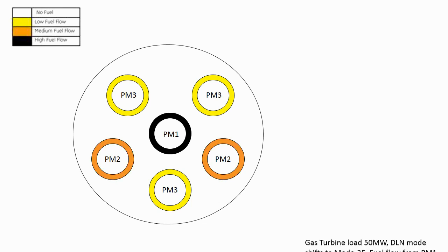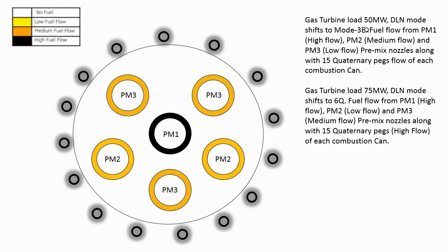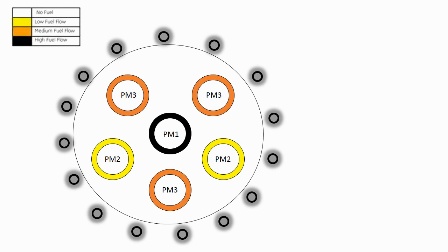When 7FA gas turbine load reaches 50 megawatt, DLN mode shifts from mode 3E to mode 3EQ. Fuel flows from PM1, PM2, and PM3 of each combustion can along with 15 quaternary pegs. Note that fuel flow is high from PM1, low from PM2, while from PM3 fuel flow is medium. There is another way of DLN tuning settings after DLN mode 3E with enriched quaternary fuel injection to stabilize the flame.